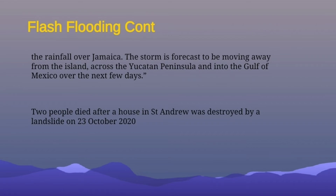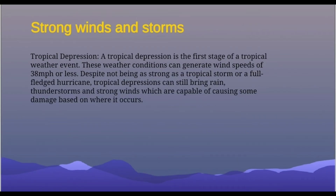Next is strong winds and storms. A tropical depression is the first stage of a tropical weather event. These weather conditions can have heavy wind speeds and, despite not being as strong as a tropical storm or a full-fledged hurricane, tropical depressions can still bring rain, thunderstorms, and strong winds capable of causing damage. It's not the regular amount of winds or rainfall — so we can see where it's extreme to an extent.